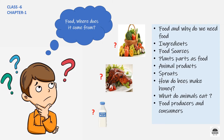Hello everyone, today we will discuss chapter 1 of Class 6 NCERT: Food, Where Does It Come From? In this video we will learn about food and why we need food, ingredients, food sources like plants and animals, plant parts as food, animal products, sprouts and sprouting, how bees make honey, what animals eat, and food producers and food consumers.